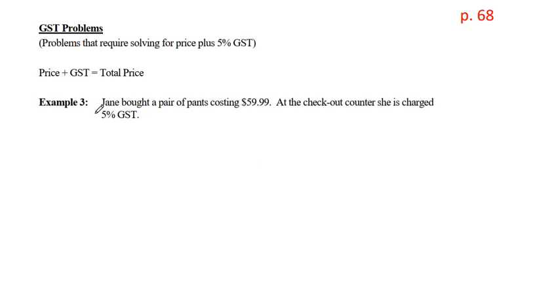If we look at example three, Jane bought a pair of pants that cost $59.99. At the checkout, she's charged 5% GST. One method we can do is set up a percent proportion. We can say, what is the GST amount on $59.99? And we know we're at 5% over 100. We can then cross multiply and divide. And we will see that X is equal to 2.9995 there. That's quite a long decimal. But we'll end up rounding at the end. When you're calculating GST, don't round your decimals as much as possible until the very end.